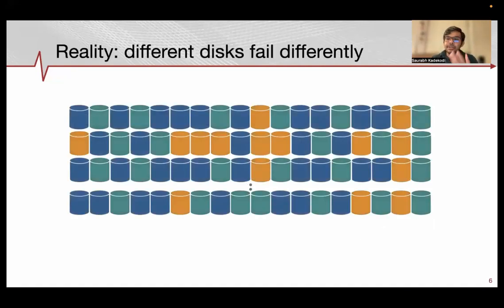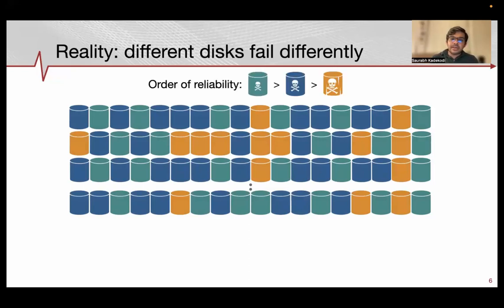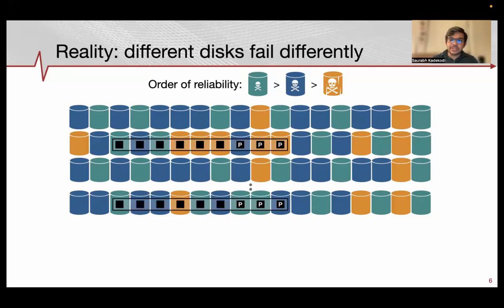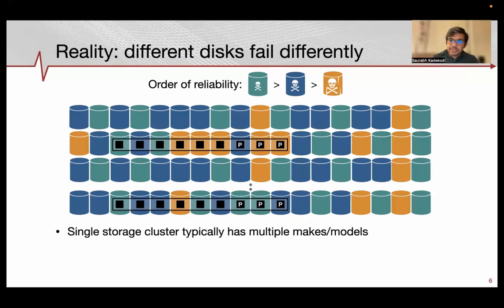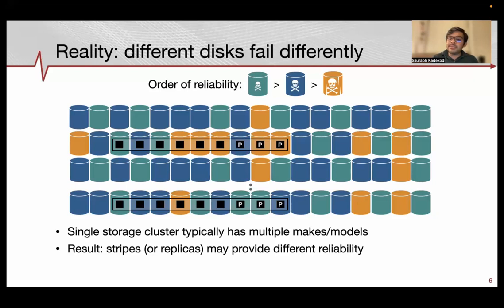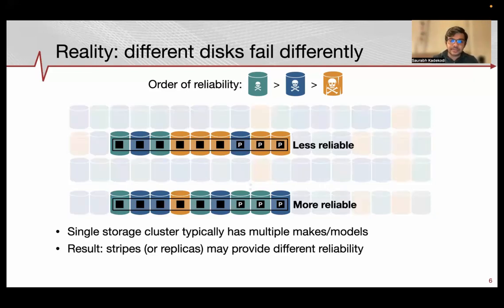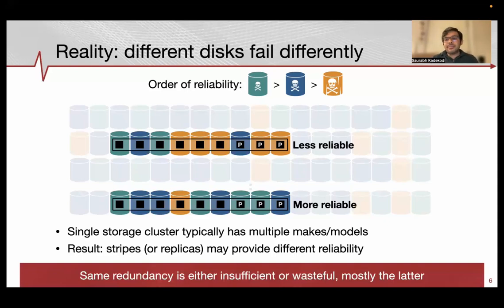In this example, I have disks from three makes and models — blue, green, and yellow — where green disks are the most reliable, followed by blue, and yellow are the weakest. Two 6-of-9 schemes are shown: the top stripe has more yellow disks, and the bottom has more green and blue disks. Even with the same configuration, these two stripes provide different reliability. The top stripe is less reliable because it has more of the yellow disks. So the same redundancy level, in the face of differently failing disks, is either insufficient or overly wasteful.